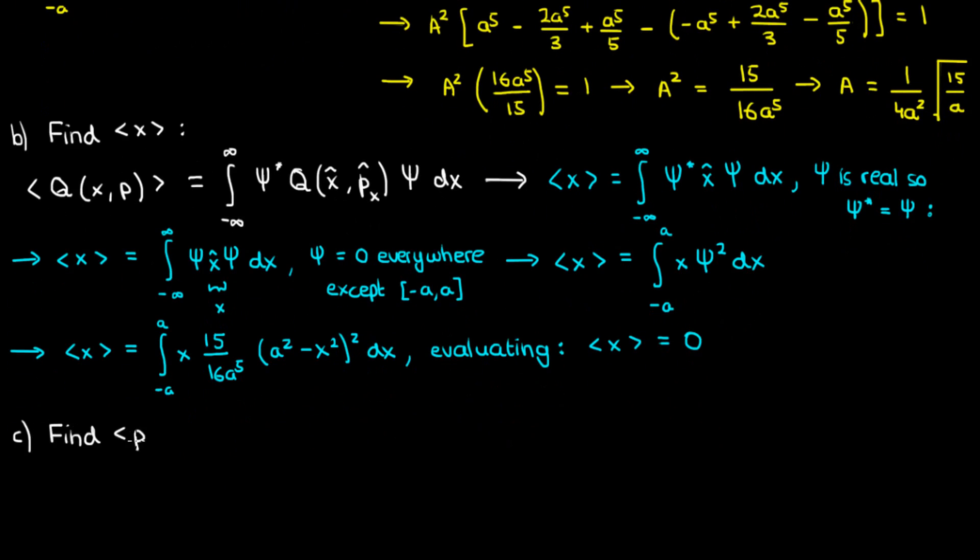Part C asks us to find the expectation value of p, which I'll write as pₓ or the x momentum, since x is the only dimension we're dealing with. We know from the expectation value formula that ⟨pₓ⟩ is the integral from -∞ to ∞ of ψ* times p̂ₓψ dx. Since ψ is real, we can drop the asterisk. And since ψ is zero everywhere except between -a and a, we change the limits of integration.